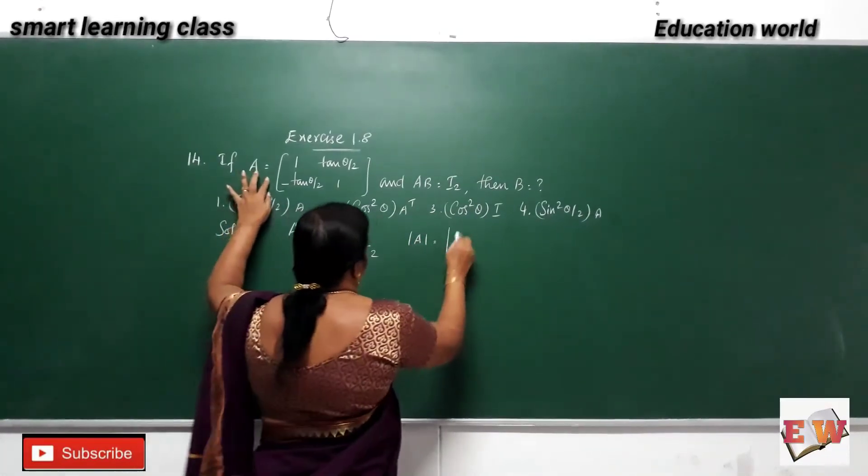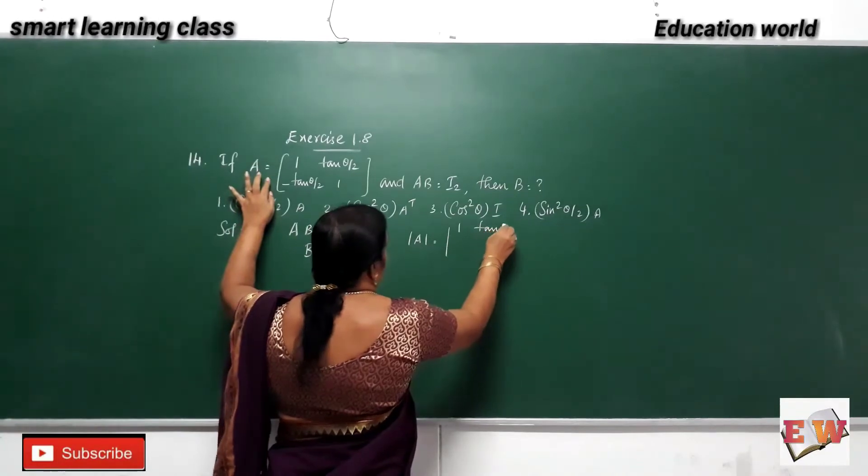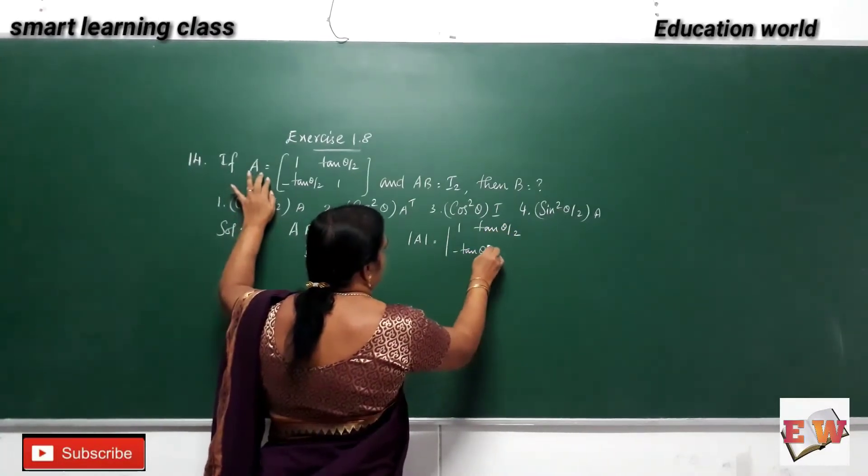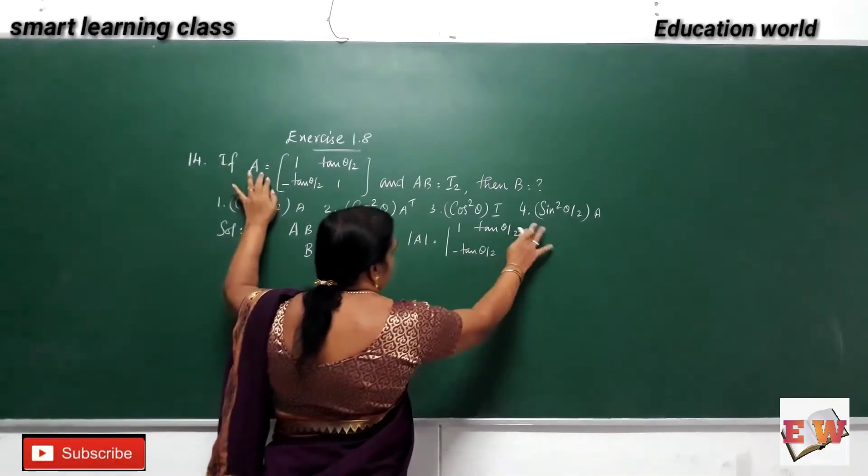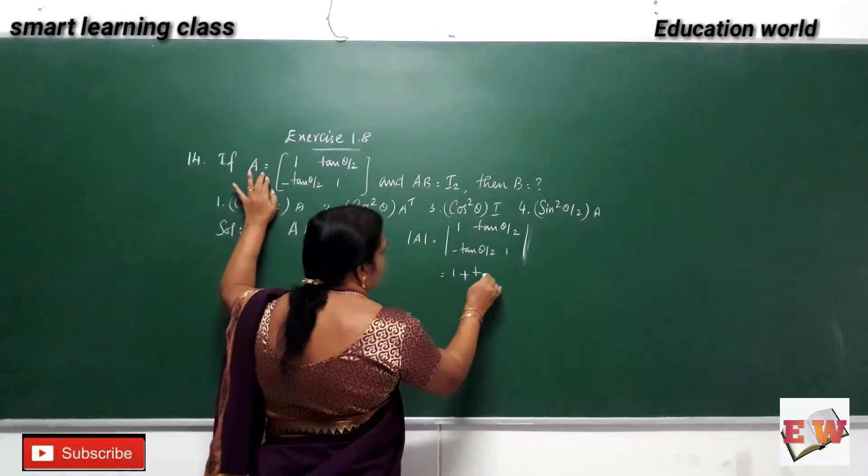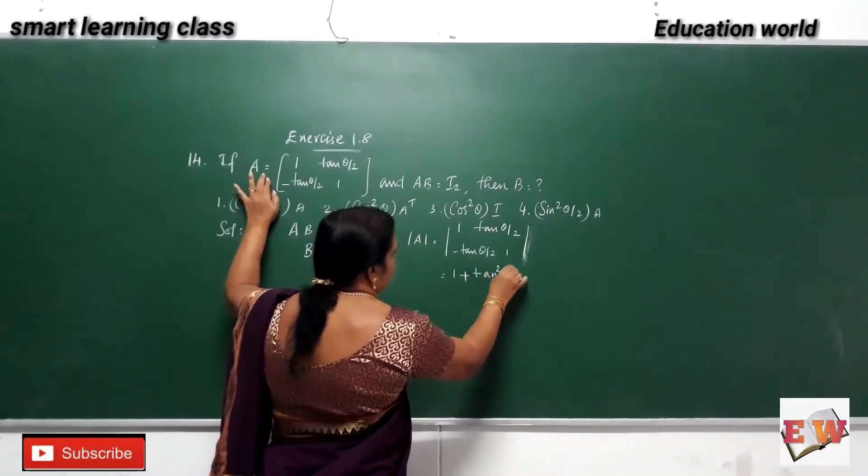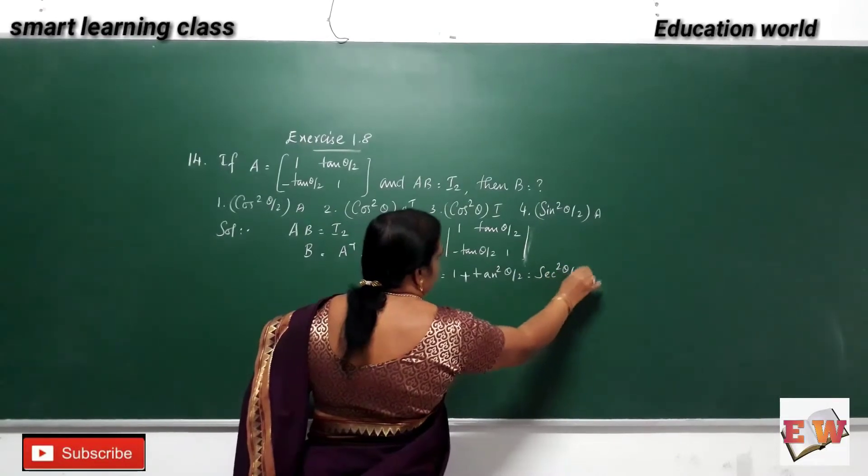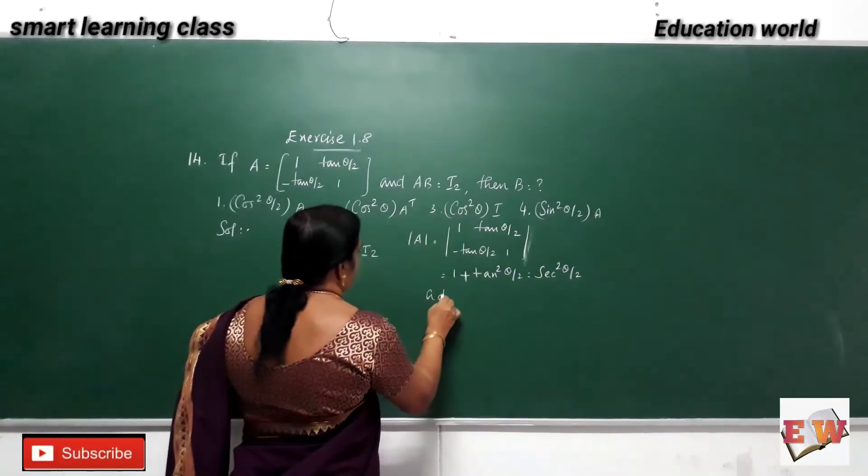What is it? 1 tan theta by 2, minus tan theta by 2, 1. 1 minus into minus plus tan square theta by 2 is equal to secant square theta by 2. We have to write the adjugate.